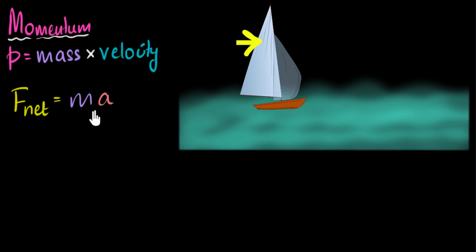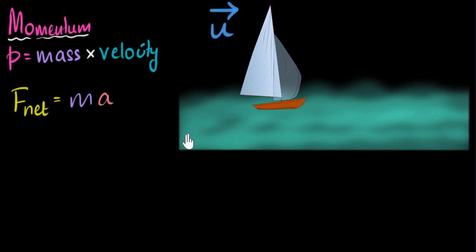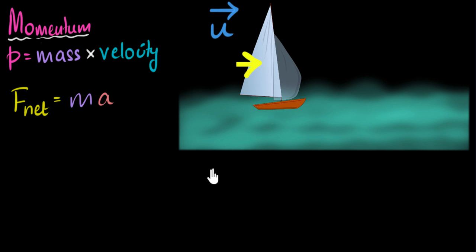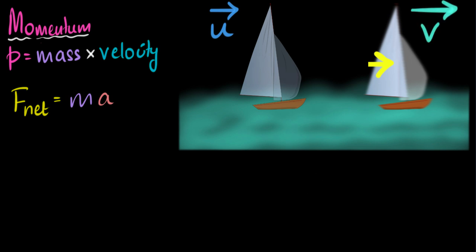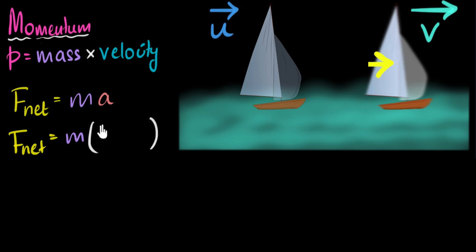Now, we want to bring momentum into the picture, so we have to write this equation in terms of velocity. We can write acceleration in terms of velocity. Let's say that even before the net force, the boat was already moving — it had an initial velocity U. When that net force acts on it, it's going to accelerate the boat, increasing its velocity. After some time it has a new velocity V. Then acceleration equals change in velocity divided by time, so the net force equals mass times (V minus U) divided by time T.